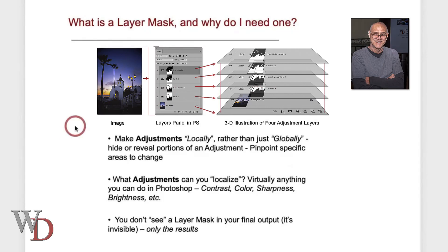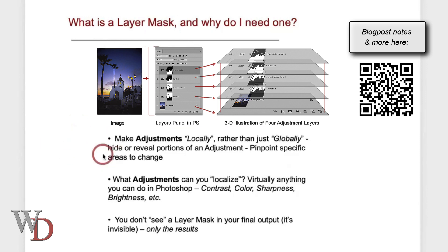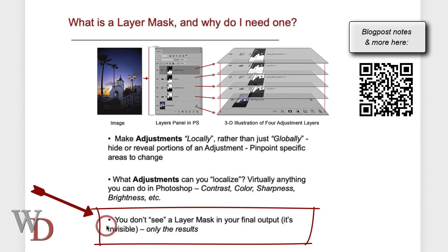Let's talk about layer masks and why you need one. A layer mask gives you the ability to make adjustments to your image locally, not just globally. By hiding and revealing portions of your adjustment, you can pinpoint specific areas to change — which is one of the really cool things about it. You can localize virtually anything you're doing in Photoshop, such as contrast, color, sharpness, and brightness.